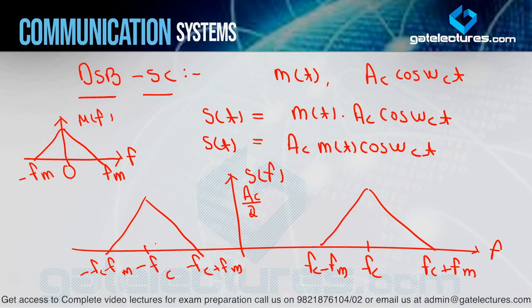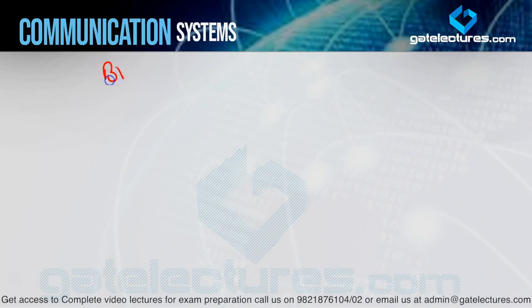But analyzing this spectrum for bandwidth calculation, you will see that bandwidth is exactly the same. Why? Because the highest frequency component is FC+FM and the lowest is FC−FM in the positive side — same as DSB-FC. So bandwidth is 2FM. Highest frequency component minus lowest frequency component in the positive side gives 2FM. So there is no improvement in bandwidth here.